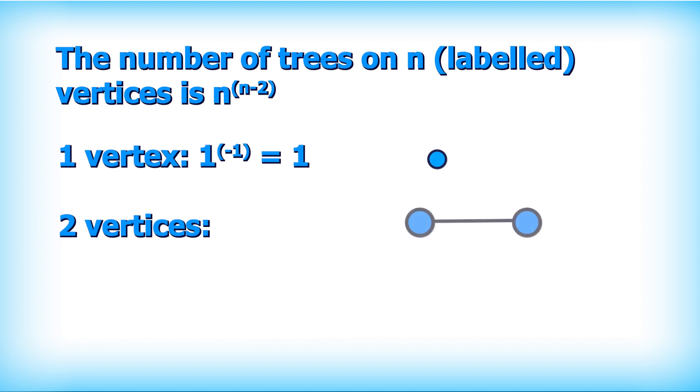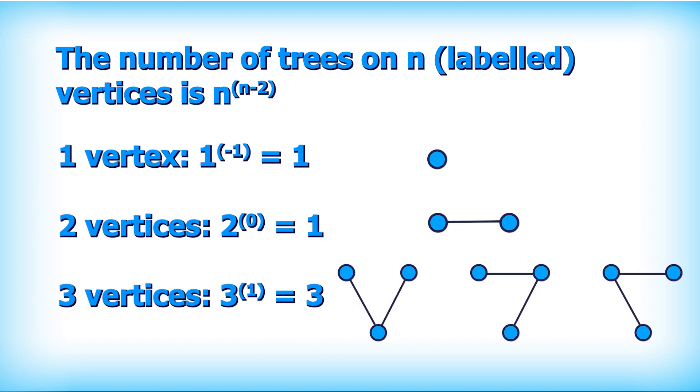With two vertices, we get 2 to the power of 0, again that's only 1. Three vertices, 3 to the power of 1, there's three different trees.